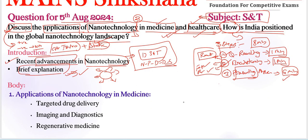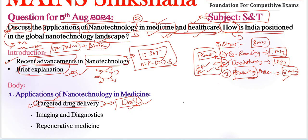Coming to the body part, we need to address keywords one by one. The first application of nanotechnology in medicine is targeted drug delivery — nanoparticles can be engineered to deliver drugs directly to diseased cells, reducing side effects. For example, Doxil, a liposomal formulation of the anti-cancer drug doxorubicin, is used to deliver the drug directly to tumor sites. That is what targeted drug delivery means — delivering to a particular organ or component of the body.